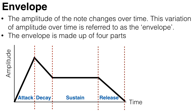Now, the envelope of a sound helps determine an instrument's timbre. And in fact, it's quite difficult to determine what instrument is playing if you change this envelope, for example, by playing the recording backwards.